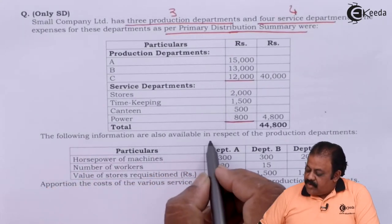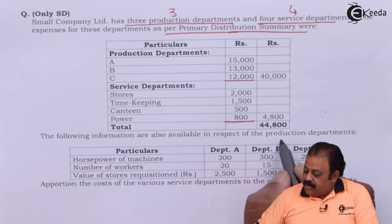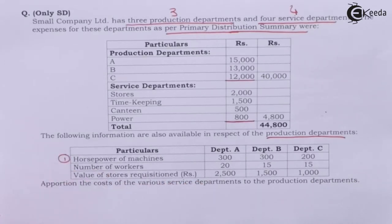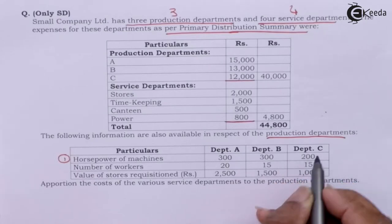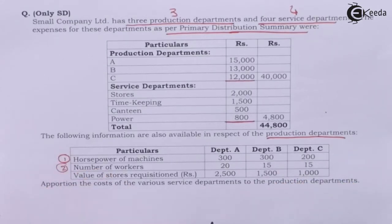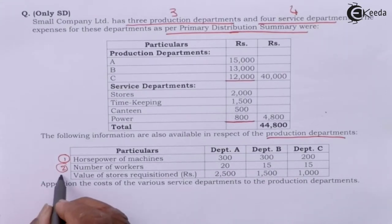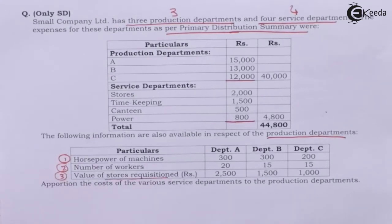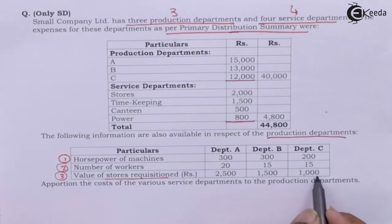The following information is also available in respect of production departments: horsepower of machines for department A, B, and C; number of workers for department A, B, and C; and value of stores requisitioned — that is the cost of consumables required — 2,500, 1,500, and 1,000 respectively.